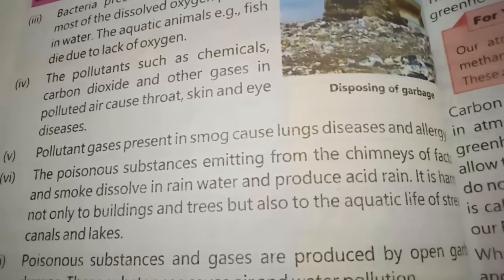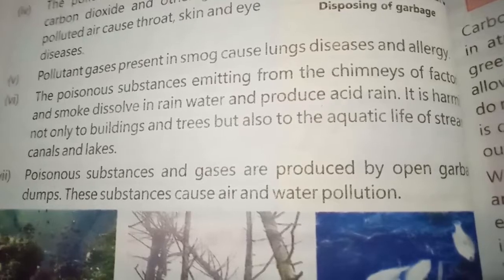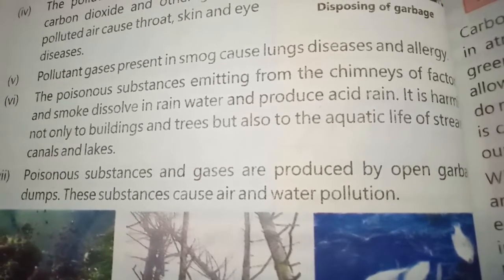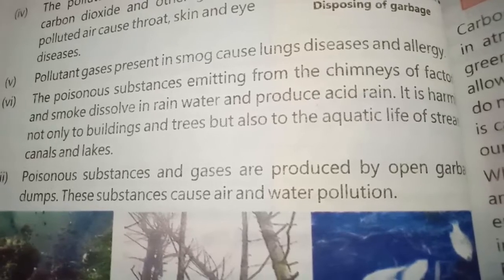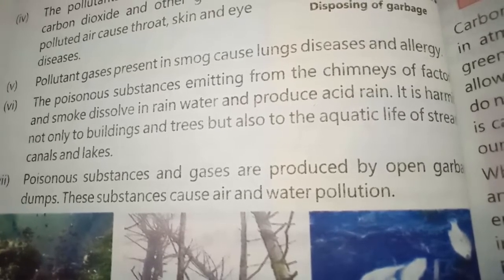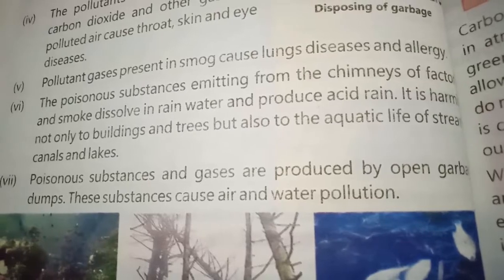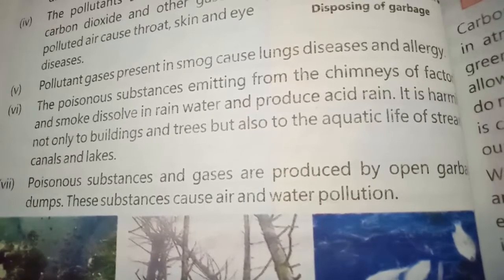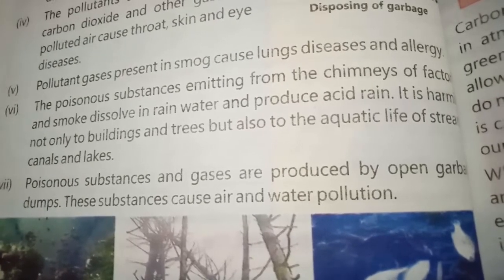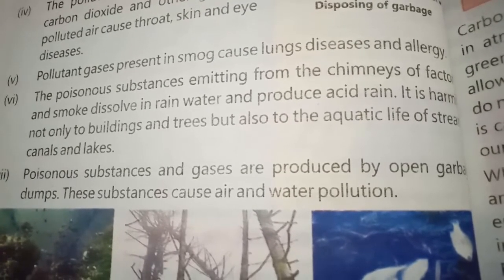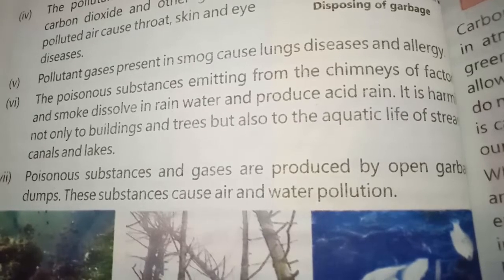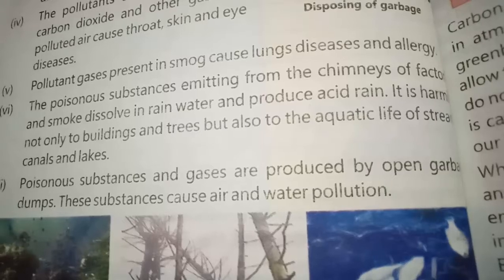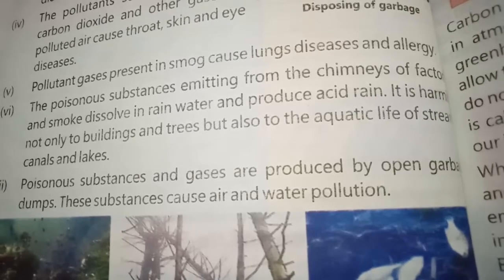The sixth point is that poisonous substances emitting from the chimneys of factories dissolve in rain water and produce acid rain. Those poisonous substances from the factory chimneys dissolve in rain water, converting the rain into acid rain. That acid rain is very harmful for buildings, trees and all aquatic animals.